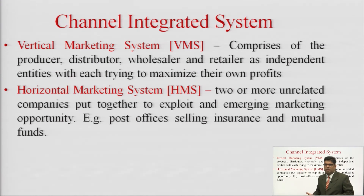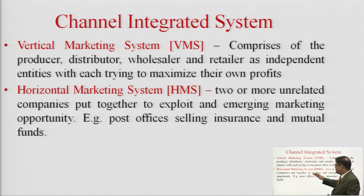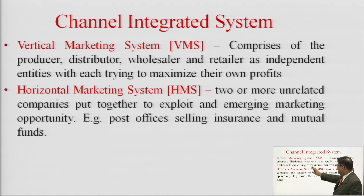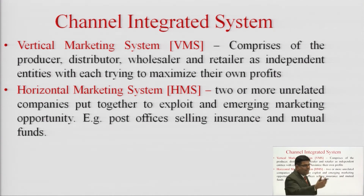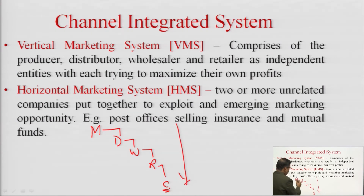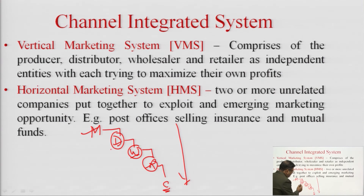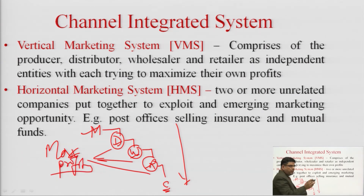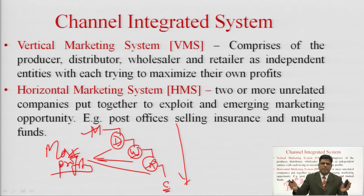Now we come to channel integrated systems. There are two types: vertical marketing system and horizontal marketing system. The vertical marketing system comprises the producer, distributor, wholesaler, and retailer as independent entities, each trying to maximize their own profits. We can visualize it as: manufacturer, followed by distributor, followed by wholesaler, followed by retailer, and finally the consumer. All the encircled entities are behaving as independent organizations, each trying to maximize their own profits.